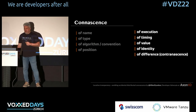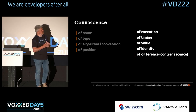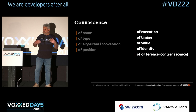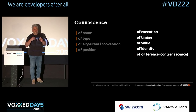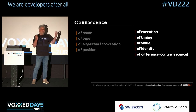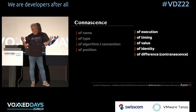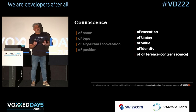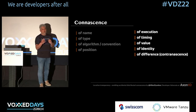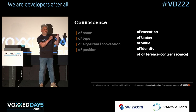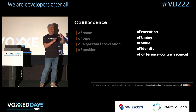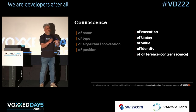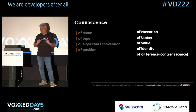Those are just a few examples. There are a lot more types of connescence. There's connescence of execution, connescence of timing, connescence of identity when two things have to reference the same object otherwise things break. And there is one more - connescence of namespace - where you cannot name a variable with a name that another variable already uses. The fact that you've already used a name prevents you from using it for something else.